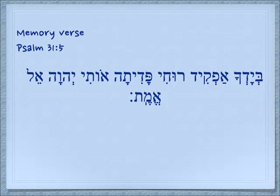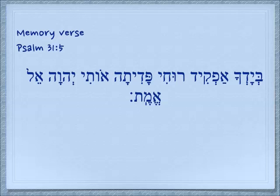Padita — you have redeemed. Oti — me. Yehovah — you know the name. El — God. Emet — of truth. 'Into your hand I commit my spirit; you have redeemed me, O God of truth.' Biadcha, Afkid, Ruach, padita, Oti, Yehovah, El, Emet.